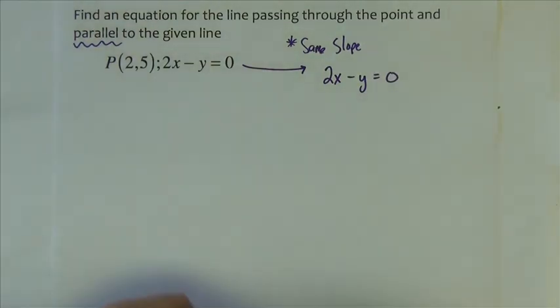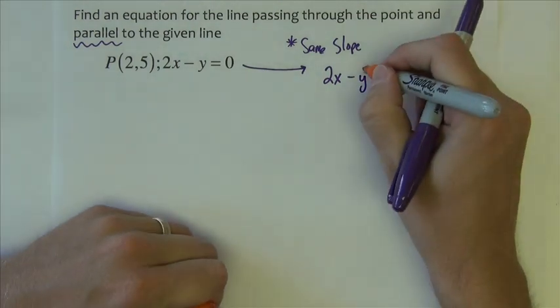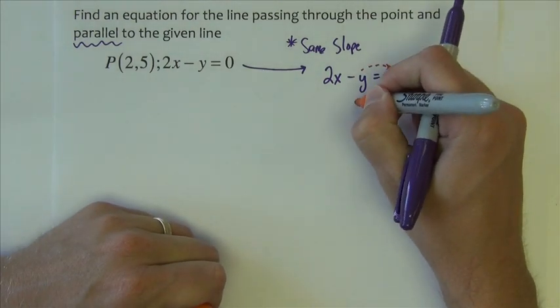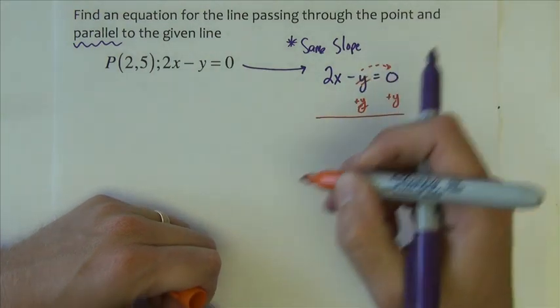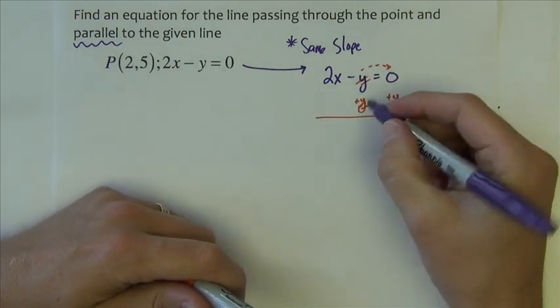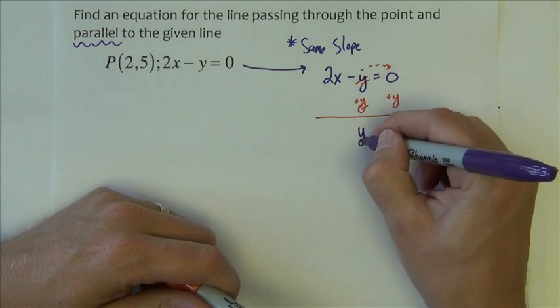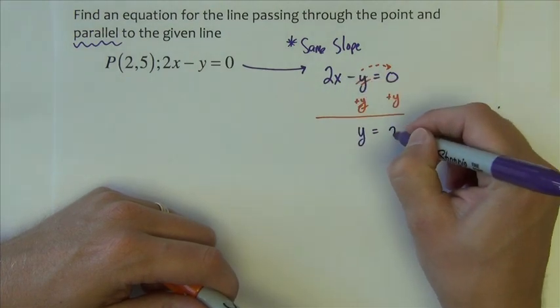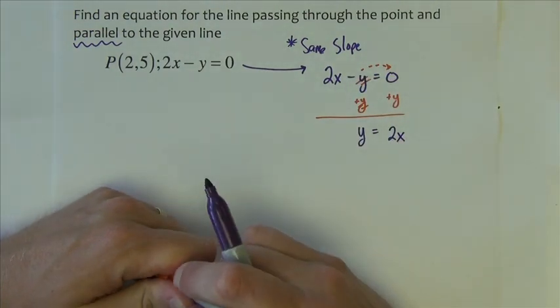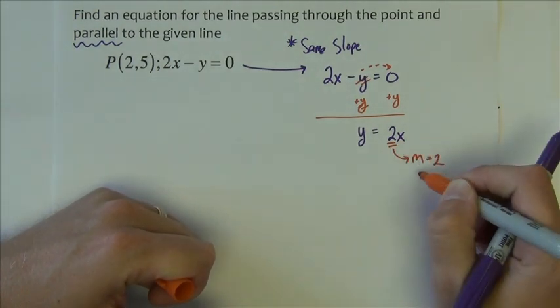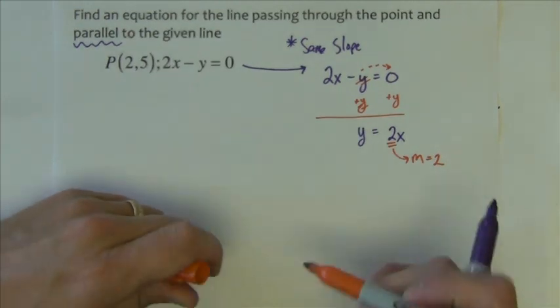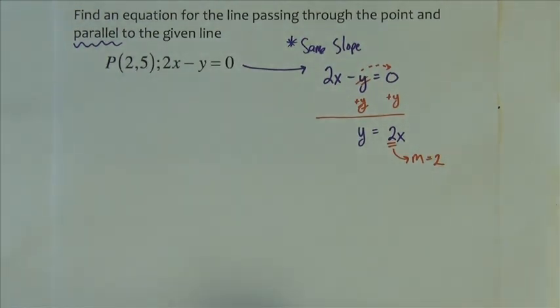That's easiest to do if I just add the y to the other side. So that would give us y on this side, or y equals just 2x on that side. So that would tell us that the slope is 2. Now that's the slope that we are going to use in our line.